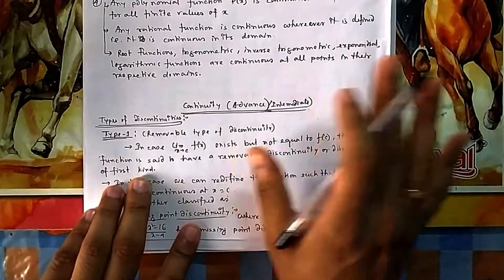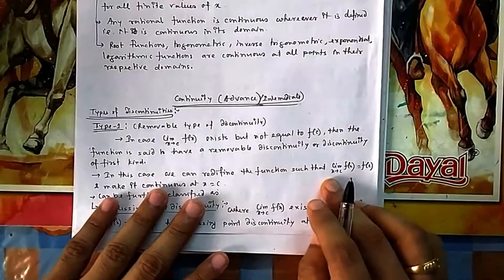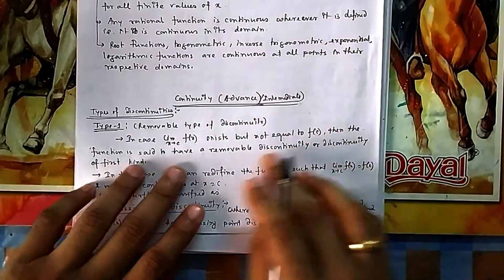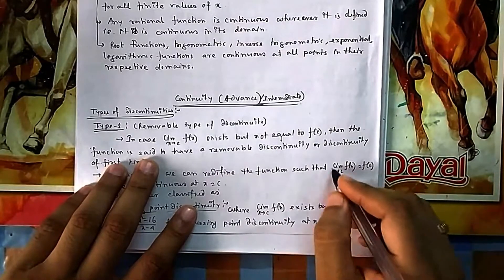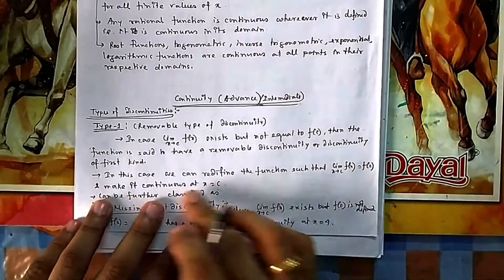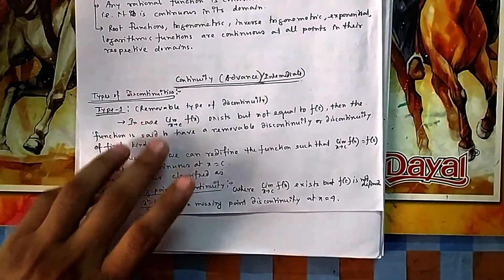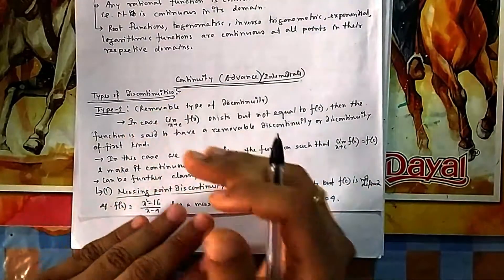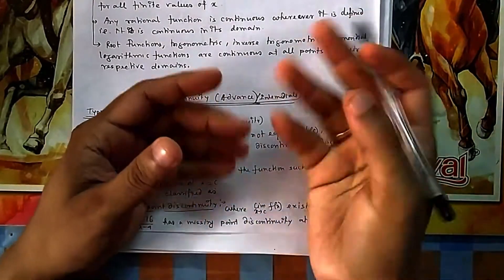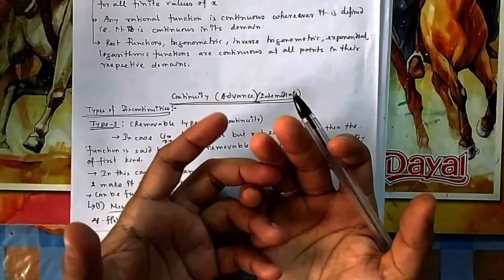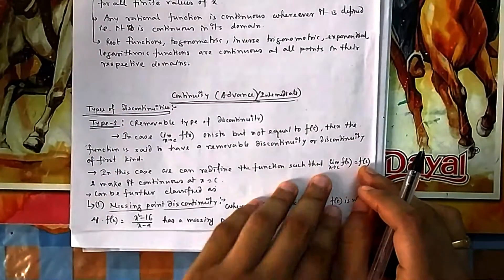It is called removable because we can remove this discontinuity — we can make it continuous. We redefine the function: since the limit is not equal to f(c), we make the value of f(c) equal to the limit. This type can be divided into two sub-cases: one where f(c) is not defined at all, and another where f(c) exists but is not equal to the limit value.